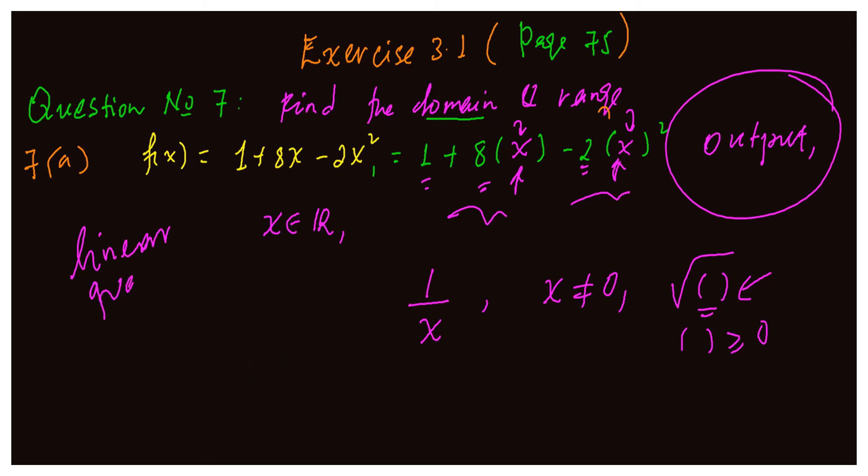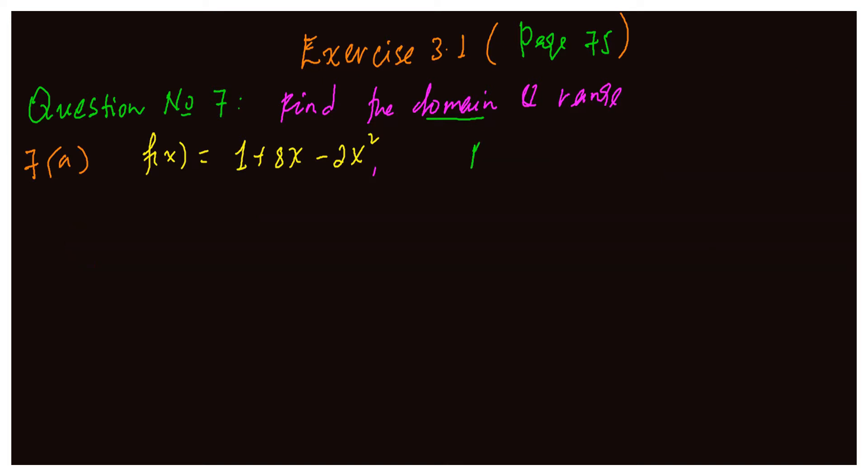So if you have a quadratic function, we have a cubic function. In general, any polynomial function of degree n or real numbers. So the domain of the given function here f(x) = 1 + 8x - 2x² is the set of all real numbers.